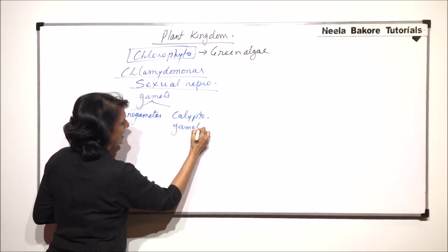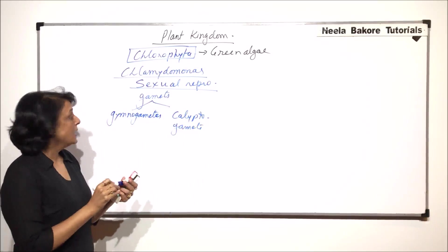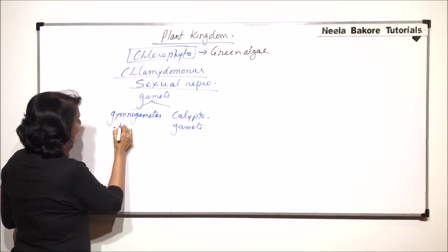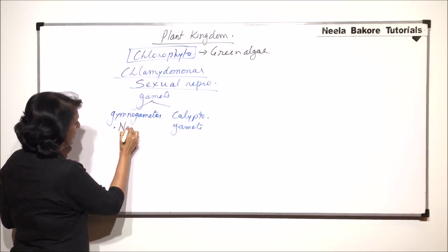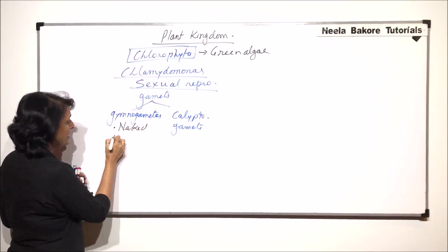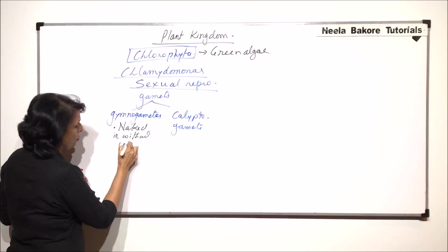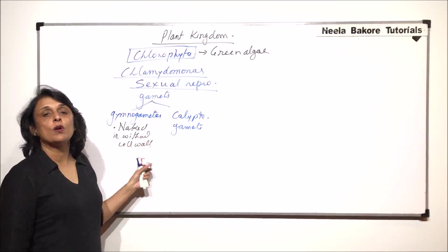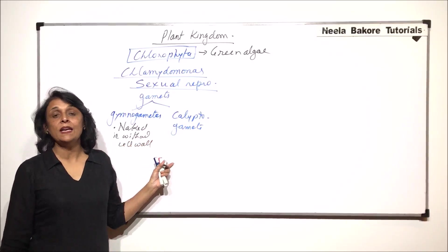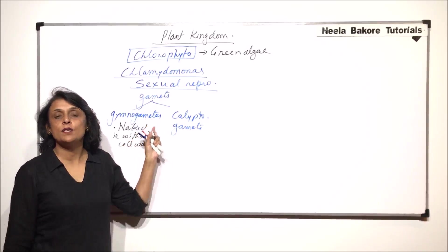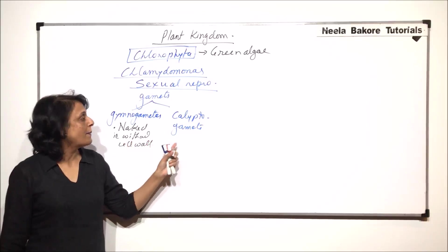Now what exactly are these gametes like? Gymnogametes are naked gametes. That means they are without cell wall. There is no layer outside the plasma membrane and that is why they are called naked gametes, or the technical term is gymnogametes.